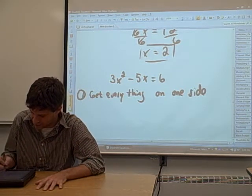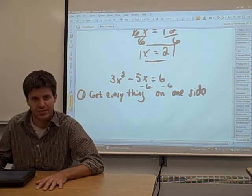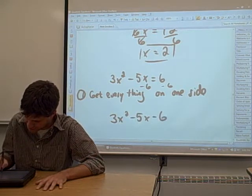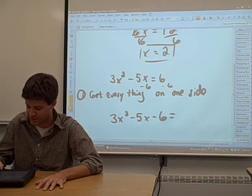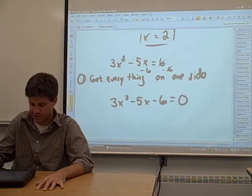So the way that we do that is we can just subtract 6, right? Subtract 6 from this side, subtract 6 from that side. We're going to get 3x squared minus 5x minus 6 equals 6 minus 6. Those just cancel, and you get 0. Okay, so that's the first step.